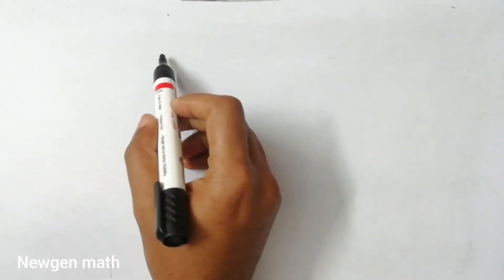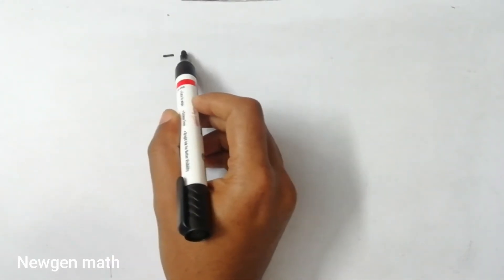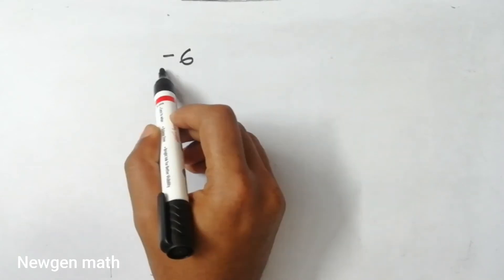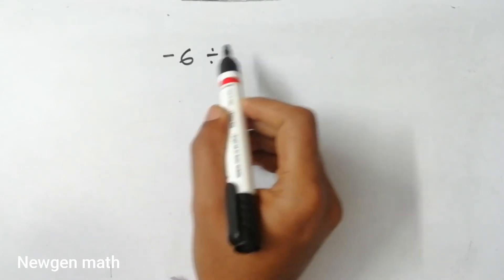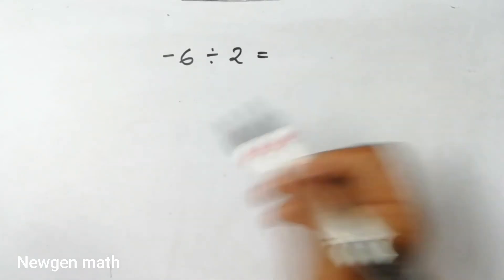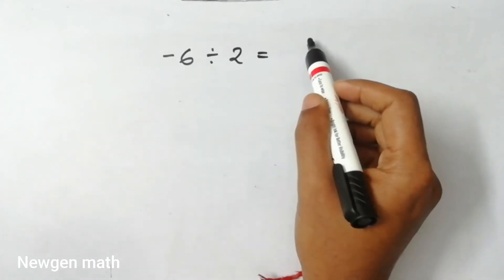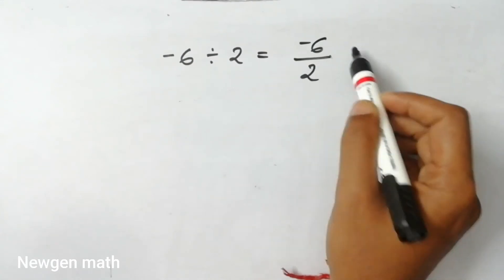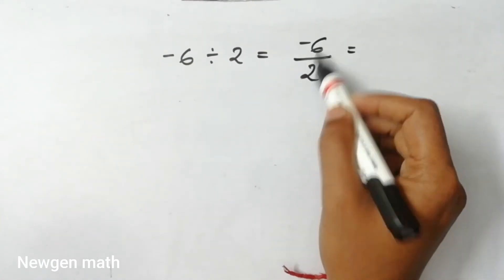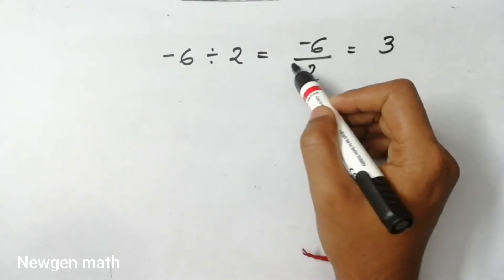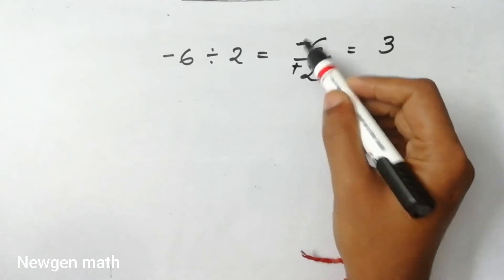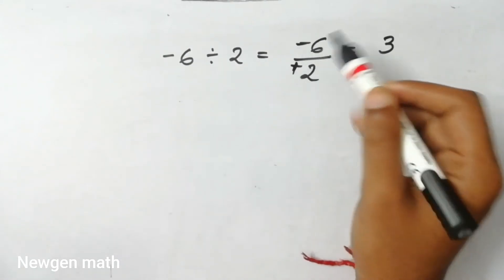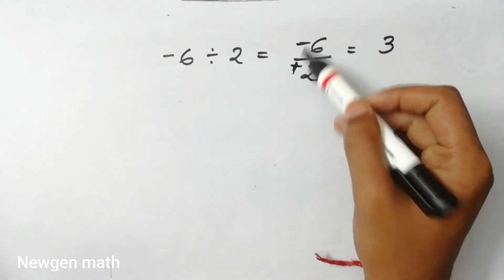It's 6 divided by 2. You can see how there's minus 6 by 2. You can see there's 6 by 2. You can see where it's 3, and this looks like it's plus. What's the answer? You can see how there's plus and minus.